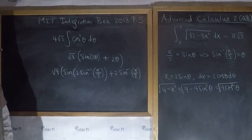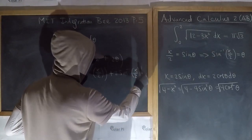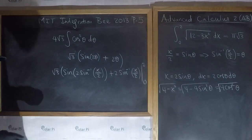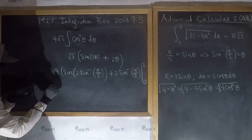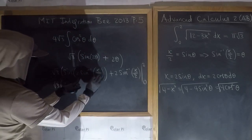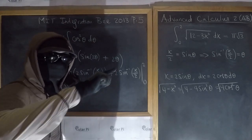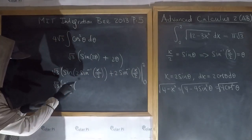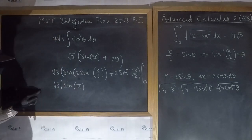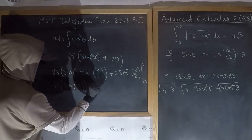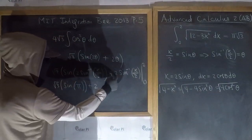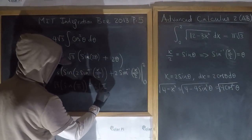Now that we're back to x's, we evaluate from zero to two. Plugging in two: sine inverse of two over two is sine inverse of one, which is pi over two. So two times pi over two gives pi for the first term, and two times pi over two gives pi for the second term.